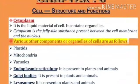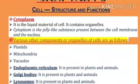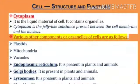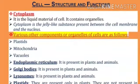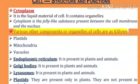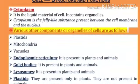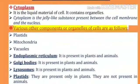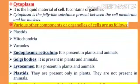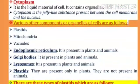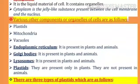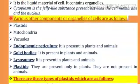Hello students, let us discuss our next topic of Chapter 8, Cell Structure and Function. The topic name is Cytoplasm. It is the liquid material of the cell and it contains organelles. Cytoplasm is the jelly-like substance present between the cell membrane and the nucleus. Various other components or organelles of cells are as follows.